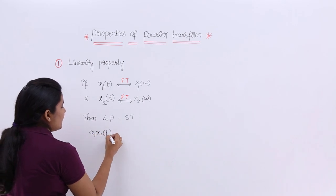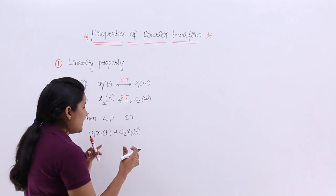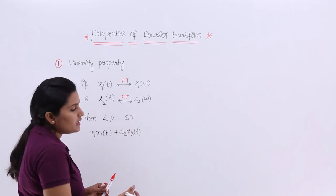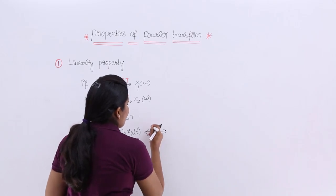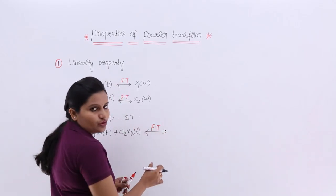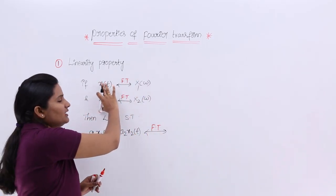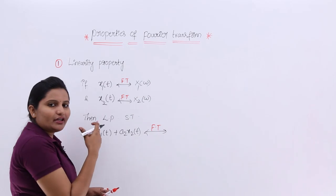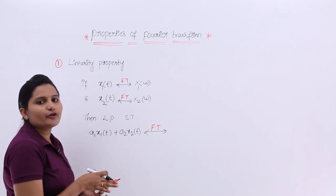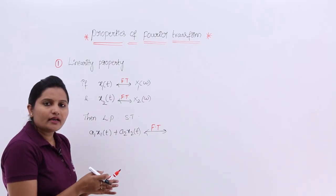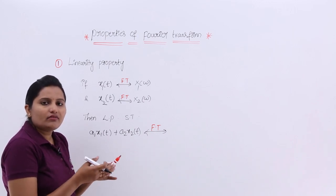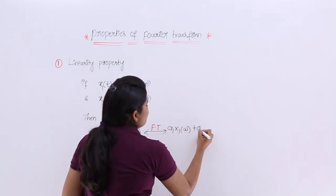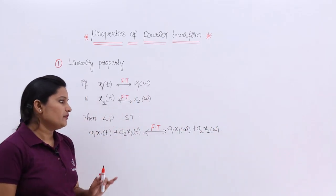Then the linearity property states that a1·x1(t) plus a2·x2(t) — that means addition of these two signals — if you consider the Fourier transform of that resultant added signal, it is equal to the summation of individual Fourier transforms, that means a1·X1(ω) plus a2·X2(ω).